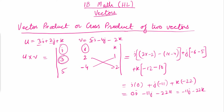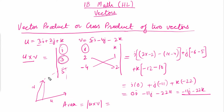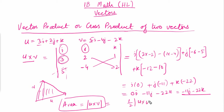The vector product gives us information about the area of the parallelogram formed by two vectors. If vector U and V form a parallelogram, the area of that parallelogram equals the magnitude of U×V. If you want the area of the triangle formed by these two vectors, divide that area by two. So the formula ½|U×V| gives the area of the triangle.